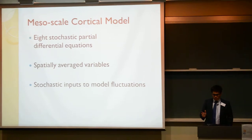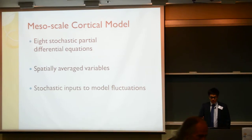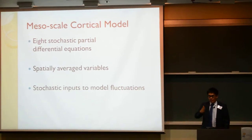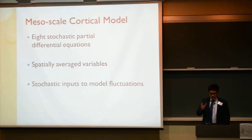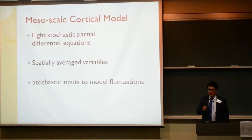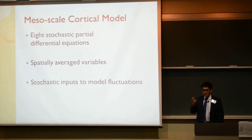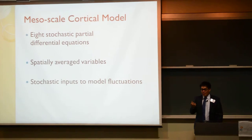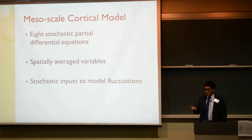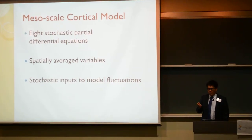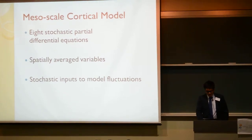The model that we use is called the Meadow-Scale protocol model. It has each stochastic partial differential equation, which basically governs the dynamics of the electrical activity of the brain in space and in time. The stochastic part models the random fluctuations of the brain, because there are chemical activities going on that are random and hard to predict. We model that with probability distributions instead. One of the key characteristics of this model is called spatially averaged variables, which I'll discuss in the next slide.